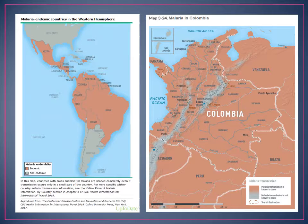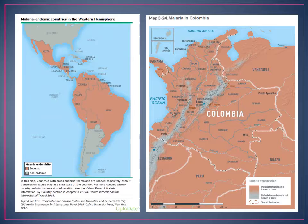In these maps, we feature areas where endemic countries are shown in red — these are known for malaria transmission. As you can see, Colombia is one of these countries, and it also includes the area of El Choco which we were talking about earlier. That's where our patient most likely became exposed.